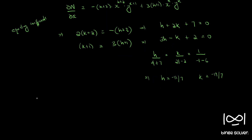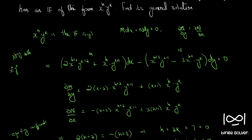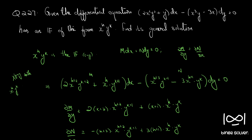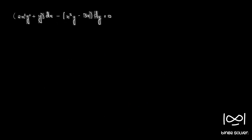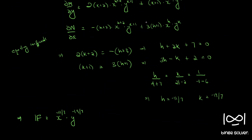So our integrating factor is x^h · y^k = x^(−11/7) · y^(−19/7).